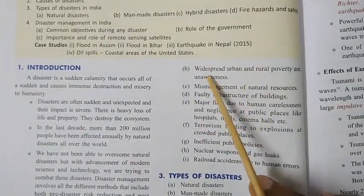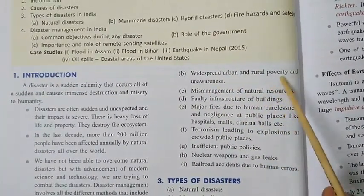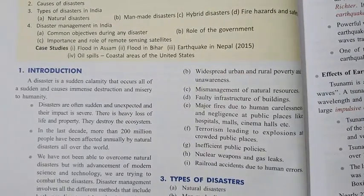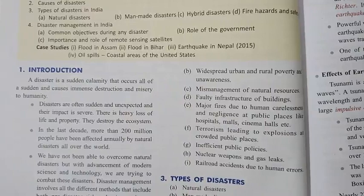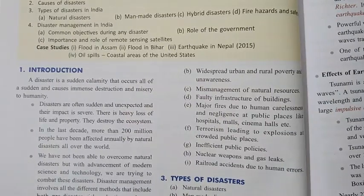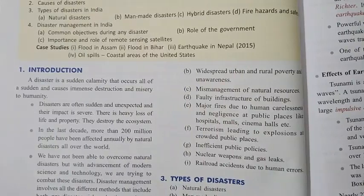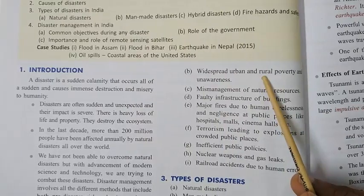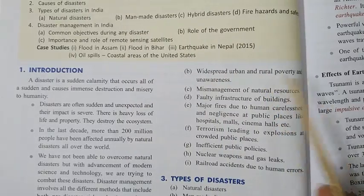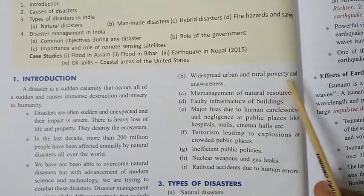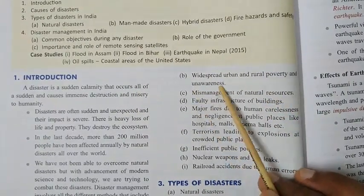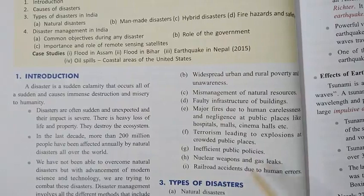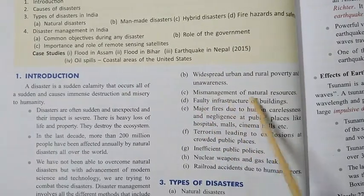The second cause is widespread urban and rural poverty and unawareness. Most focus is being given to the development of cities — urban areas — and villages, the rural areas, are being left behind. This is why in rural areas there is still a lot of poverty and unawareness, because a large number of people are illiterate.